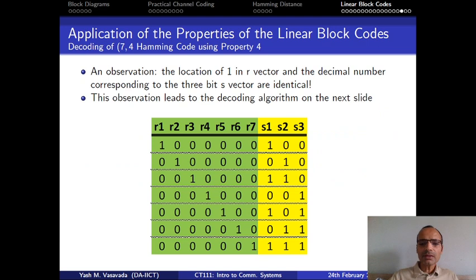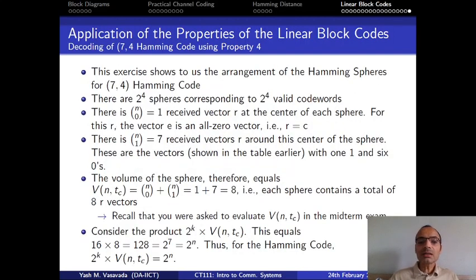So you see the fact that we are able to make this type of tables, which has all these different syndrome vectors, and the fact that we said that this table is independent of what the transmitted codeword is, that allows us to start thinking of this syndrome decoding schemes in terms of Hamming spheres.